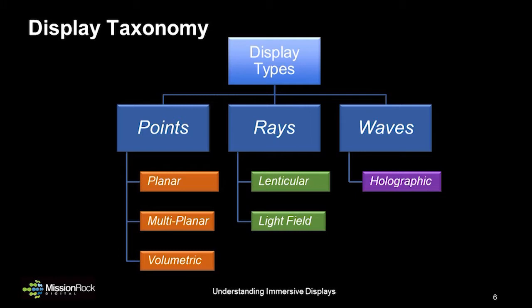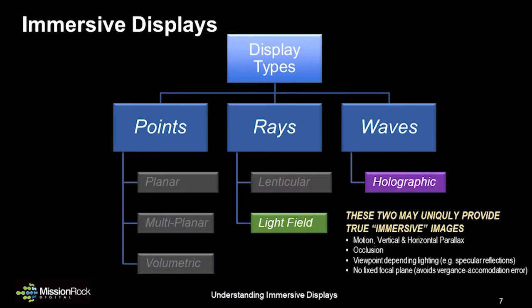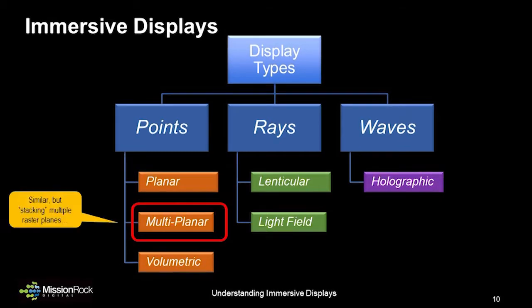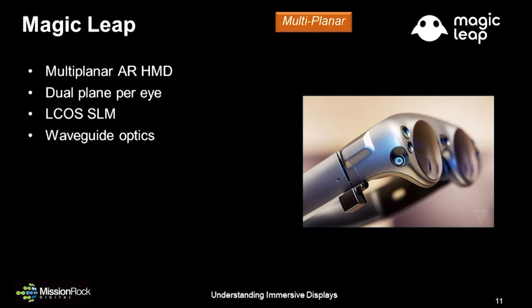We'll talk about a few of them and share some examples of devices that are now commercially available, or in many cases in R&D labs, with promise for commercialization within the next few years. Light field and holographic are perhaps the most discussed methods of creating a truly immersive image — they not only provide motion parallax and occlusion, but support viewpoint-dependent light such as specular reflections, and the holy grail: removing vergence-accommodation error, which means your eyes can focus in free space, not just on the display panel itself. Let's start by considering today's typical display: an array of point emitters, or pixels, on a planar surface. These are used everywhere, from mobile devices to the largest televisions and even cinema projectors. It's more interesting when you stack multiple planar displays on top of each other. Magic Leap 1 uses dual planes per eye to allow you to shift focus from near to far.